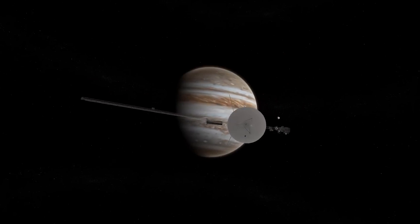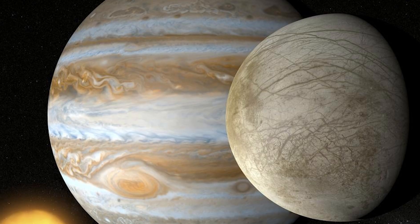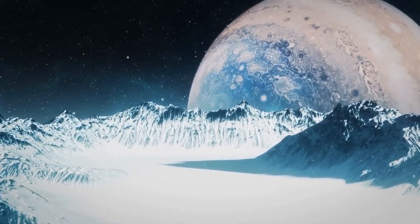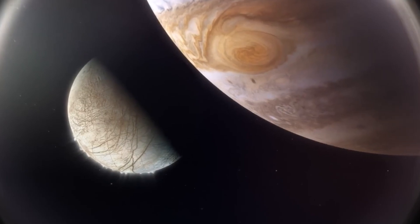Voyager 2, in particular, unveiled that Europa, one of Jupiter's 53 named moons, featured an icy shell exceeding 60 miles in thickness.